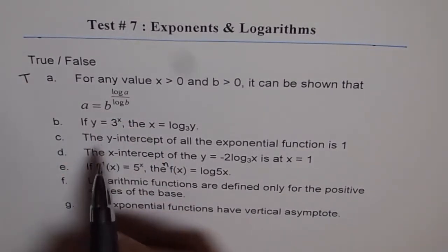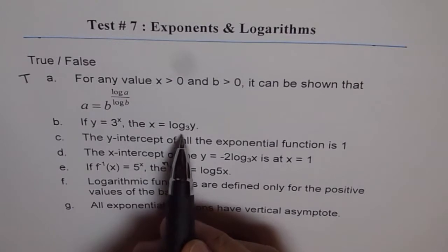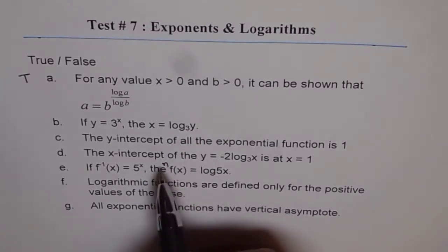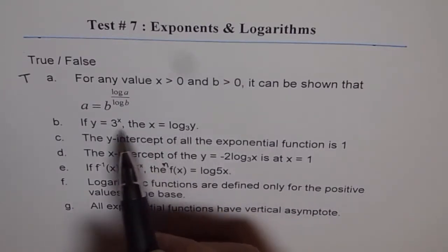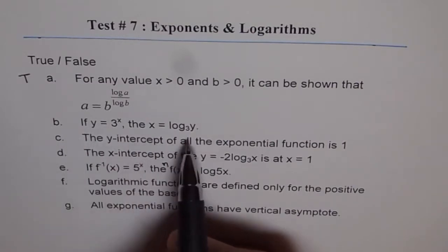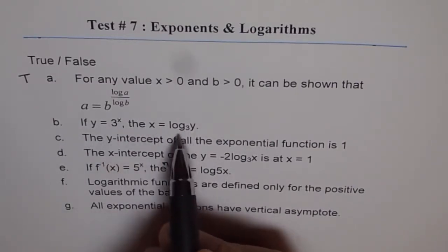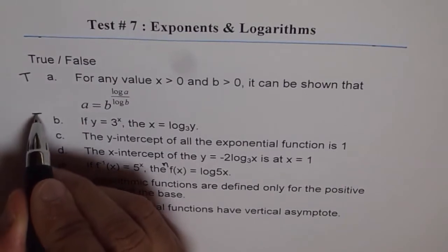If y equals 3 to the power of x, x equals log to the base 3 of y. That is also true. You know how, right? You can take log to the base 3 both sides and get it. They are inverse of one another, correct? So this is also true.